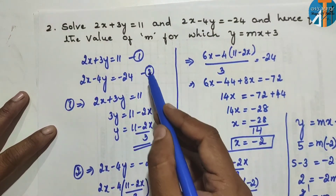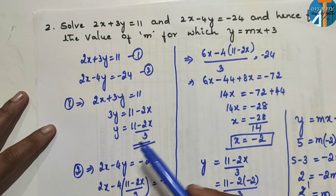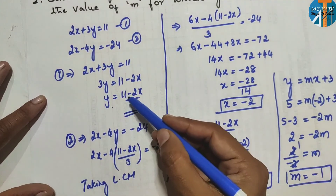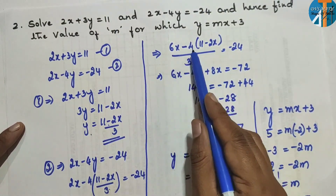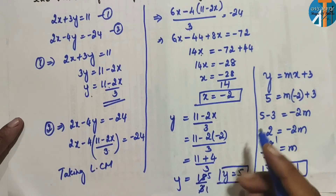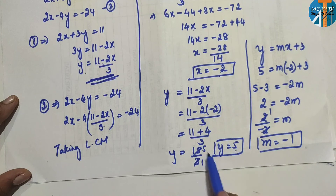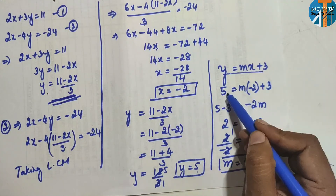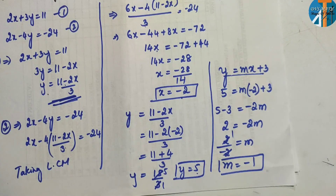To summarize: we took two equations, converted the first equation in terms of y, substituted that into equation 2, took LCM of 3, simplified and solved to get x = −2. Substituting back gave y = 5. Finally substituting x and y into y = mx + 3, we got m = −1. This is question number 2 in exercise 3.3.